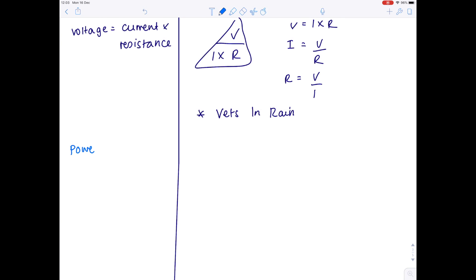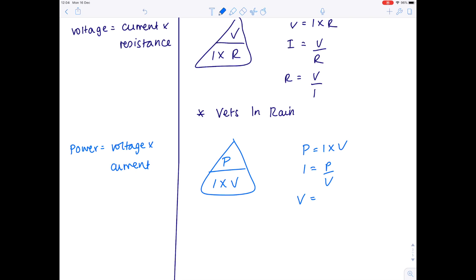Next up, power equals voltage times current. So that would be PIV. So power is current times voltage. Current is power divided by voltage. And voltage is power divided by current. PIV. It sounds like a word. So that was how I would remember that one.